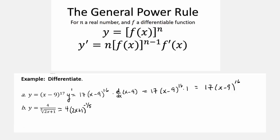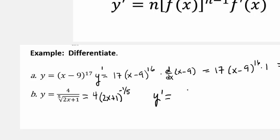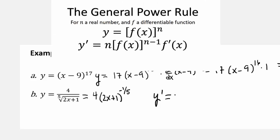What are we going to write? We're going to write y prime equals, and we're going to have, the 4 stays the same, right? Because it's a coefficient. 4 times, bring the power out front, so we have negative 1 fifth times,